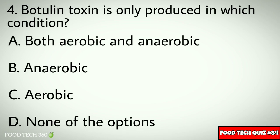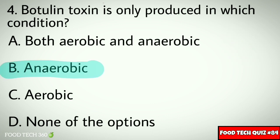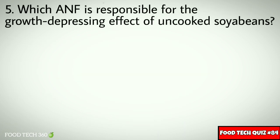Question number 4: Botulin toxin is only produced in which condition? Options: A. Both aerobic and anaerobic, B. Anaerobic, C. Aerobic, D. None of the options. Correct answer: B. Anaerobic.